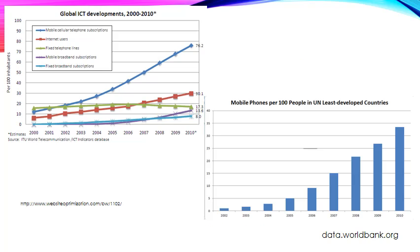Here are two graphs. The one on the left shows global ICT developments between 2000 and 2010. It's a line graph where the x-axis shows the change in time and the y-axis shows per 100 people in the world. The top blue line — mobile phones — has risen dramatically from just over 10 per 100 people up to 76 per 100 people. So 76 out of every 100 people in the world had a mobile phone by 2010.